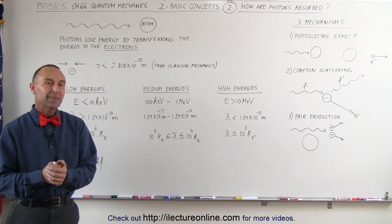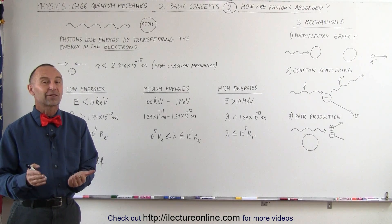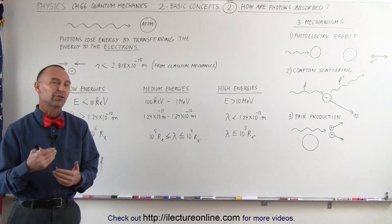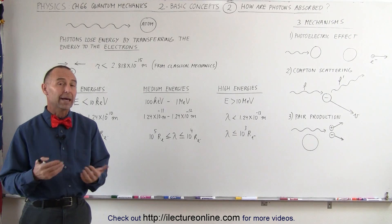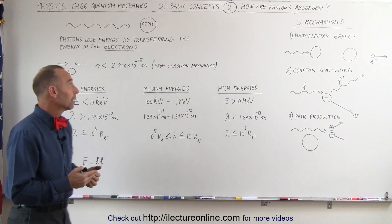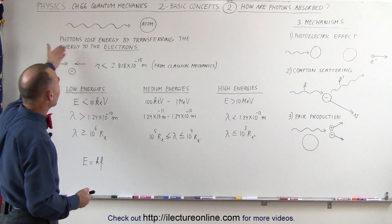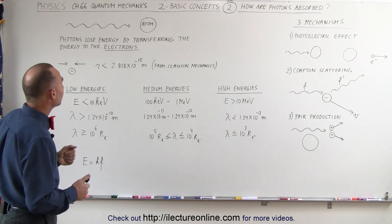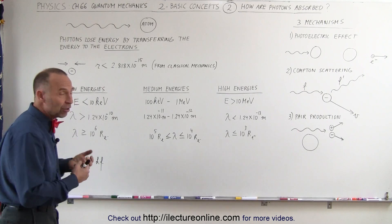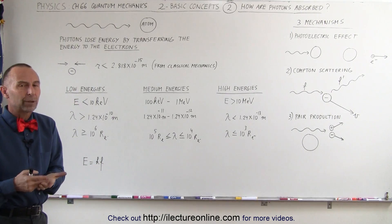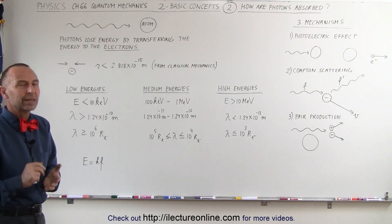Welcome to ElectronLine. In this video, let's explore how photons are actually absorbed by matter. We have a photon that approaches an atom and the question is: how does that photon get absorbed? Well, it depends on three things.